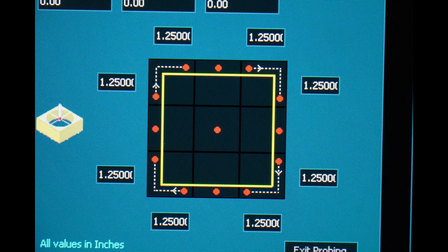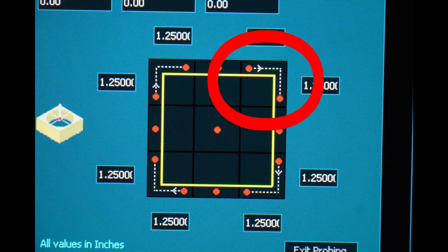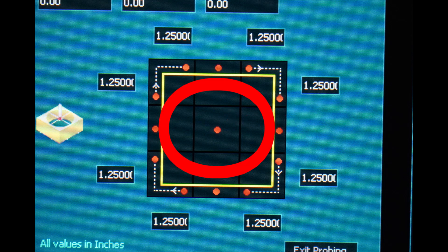Here we have a depiction of the probe and the red dots representing each of the places that you can touch off of the probe with your bit. We're only going to use the top right button for X and Y and the center button to find our Z height.